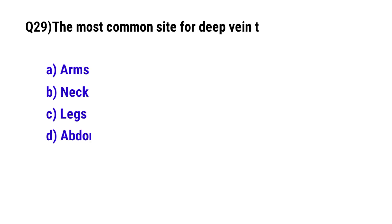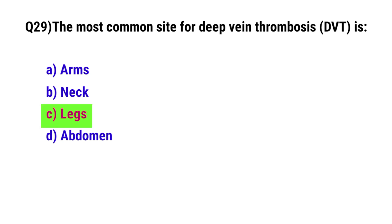Question No. 29. The most common site for deep vein thrombosis is? The correct option is C: Legs.